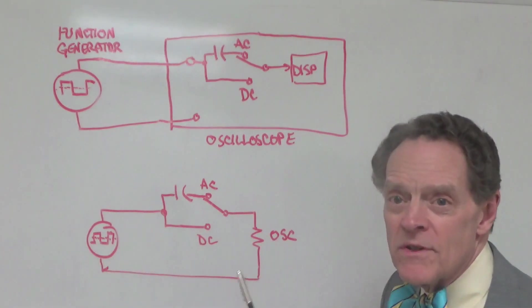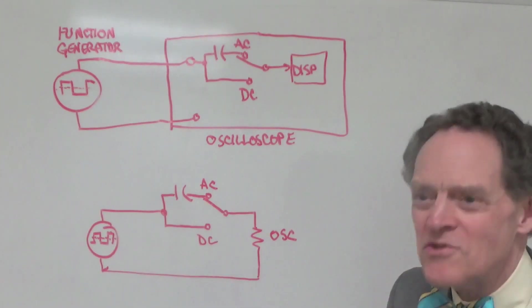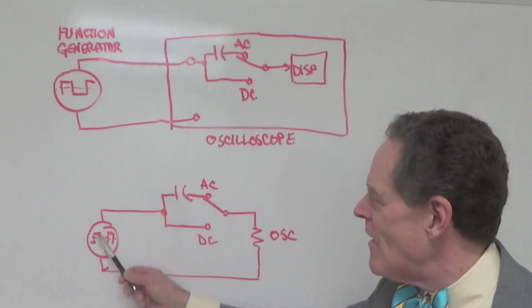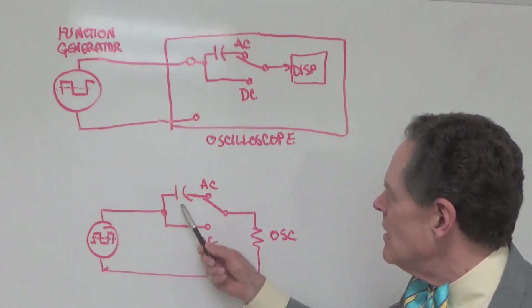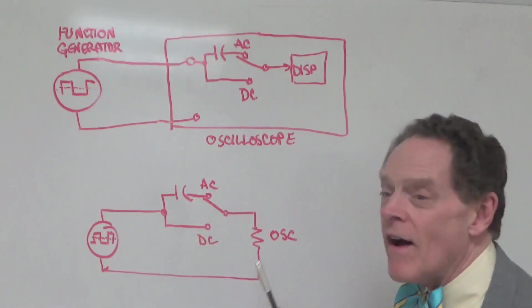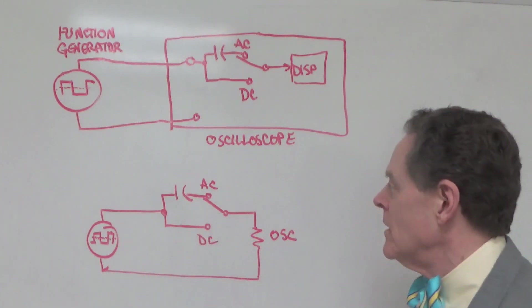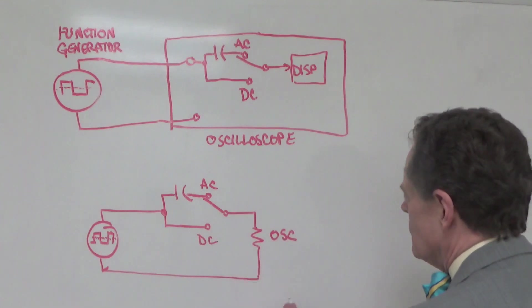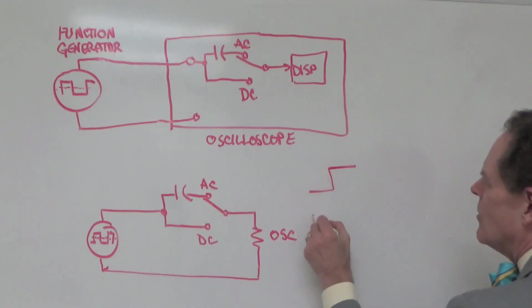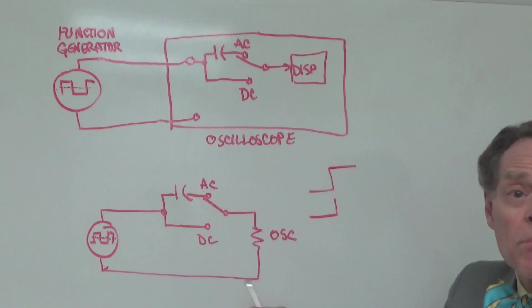And then the current that's in here is limited only by the resistance, the voltage level here and the resistance. And so, when it's a short and the voltage is changing, when the voltage is changing, it's a short. And so, it's going to follow that vertical slope going up. The voltage across here will follow that vertical slope going up because there's no voltage across here because it's a short.